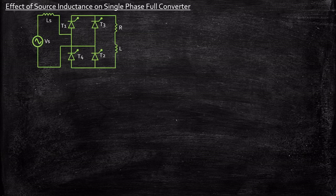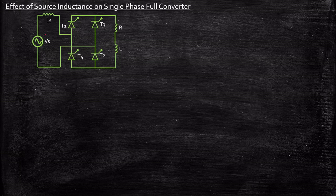This is the circuit diagram of a single phase full converter. We had seen this previously with an RL load and analyzed the output waveforms. Now in certain cases, the source itself might have some amount of inductance. The representation of that inductance is an inductor connected in series with the source, because the source sometimes might have inductance in certain circuit operations. In such cases, there will be some amount of impact on the output voltage, and that is what we are going to study.